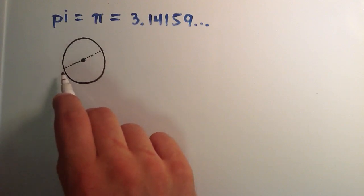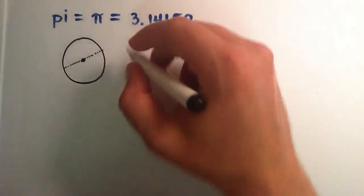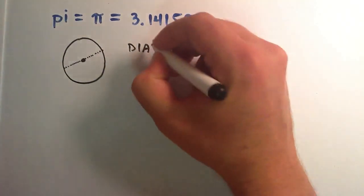A line segment that starts at one edge of the circle, travels directly through the center, and stops at the other edge of the circle is called the diameter of the circle.